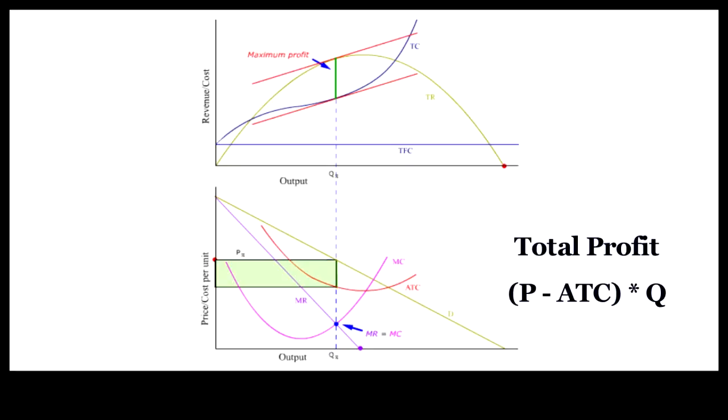Maximum profit is represented by an area in the bottom panel because the vertical axis is based on per unit value.